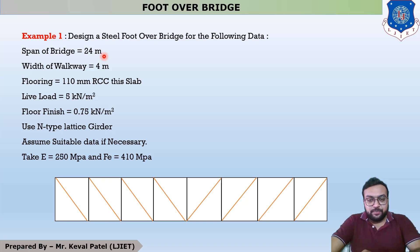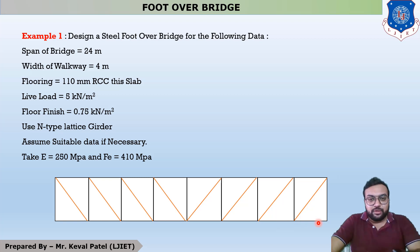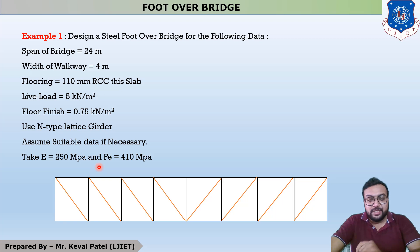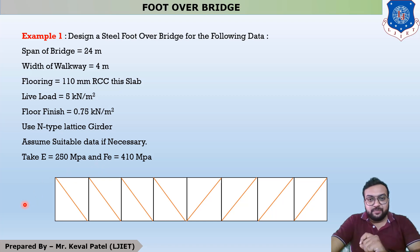The difference between these types is as follows: in a through type of foot over bridge, the floor system is connected to the bottom chord. When the flooring is connected to the bottom chord, it is called a through type. Conversely, when the floor system is connected to the top chord, it is called a deck type, which is generally seen in hilly regions. In a semi-through type, the floor system is connected between the top chord and bottom chord.